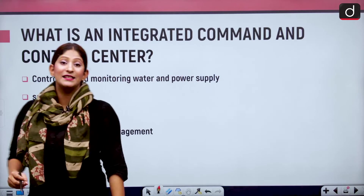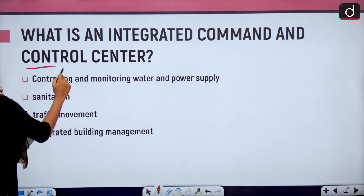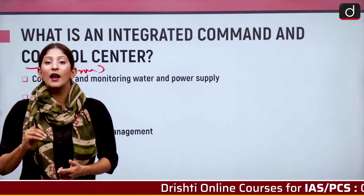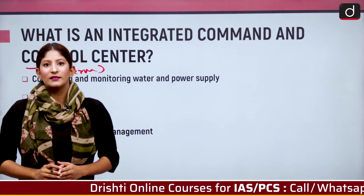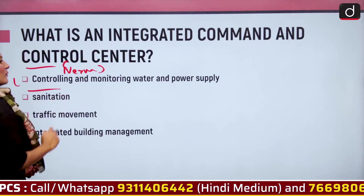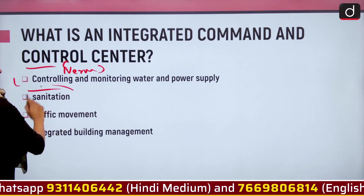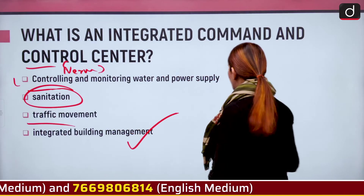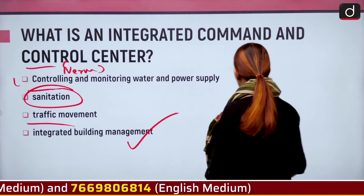ICCCs — Integrated Command and Control Centers — are the nerve of the entire smart city plan. These are rooms of ICT-connected computers that are able to regulate and monitor the entire city. The entire city is managed by an authority through this ICT connection within ICCCs, which provides controlling and monitoring of waste and power supply, sanitation, traffic movement, and integrated building management. City connectivity and internet infrastructure are also handled through ICCCs.